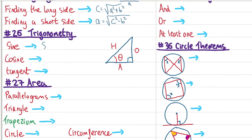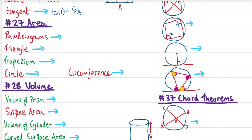Trigonometry: SOH CAH TOA. Sin θ = O/H. Cos θ = A/H. Tan θ = O/A. If you remember SOH CAH TOA you should be able to recite all three trig functions.